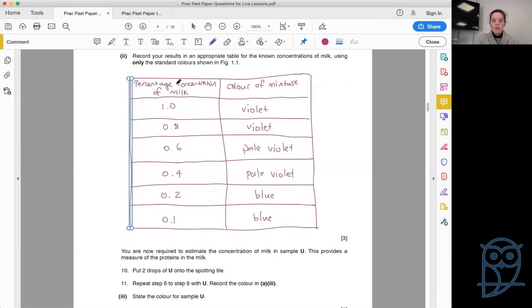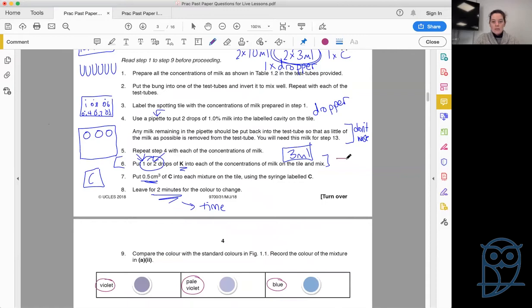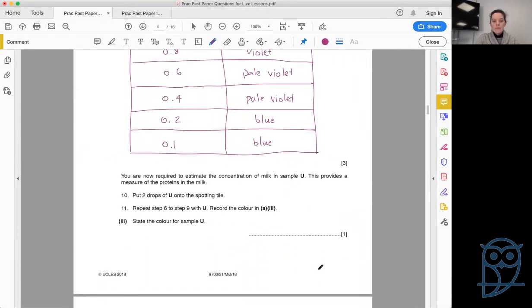If we then move to the next piece, it says you are now required to estimate the concentration of milk in sample U. This provides a measure of the proteins in the milk. So where does U fall between all these different percentage concentrations? We have to put two drops of U onto the spotting tile and repeat steps six to nine with U, working through this whole process. And now this is where you say, I don't have a U and I can't make a guess based on the information that I've got. That is where we return to those instructions. In there, we find the concentration of U.